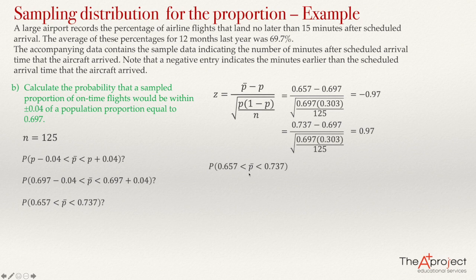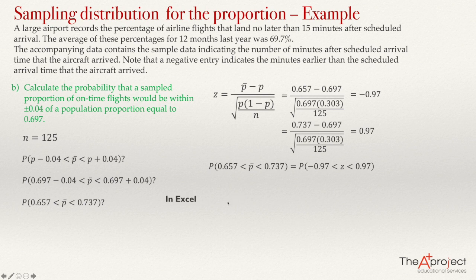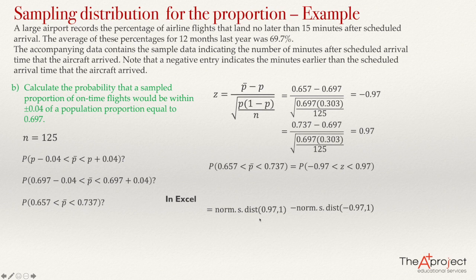We solve this in Excel using the standard normal distribution: type equals NORM.S.DIST of 0.97 minus NORM.S.DIST of negative 0.97, and press Enter. The answer is 0.6680. That answers the second question. With that, I finish my explanation of this problem. Thank you.